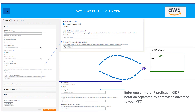The most important step is creating the VPN connection, which is based on the gateways created so far. You name the connection, then for Target Gateway Type select VPG. There is also an option for Transit Gateway, which will be covered in upcoming sections. Then you choose the VPG from a dropdown. For customer gateway, you can select an existing one from the dropdown or create a new one.